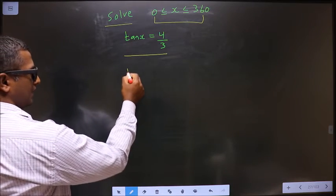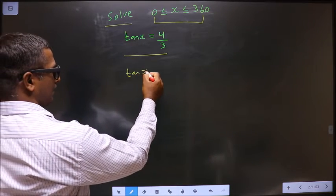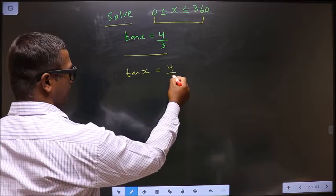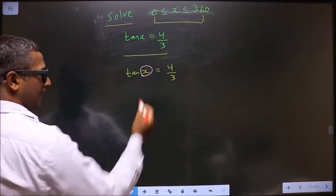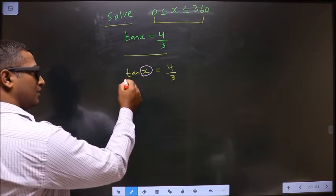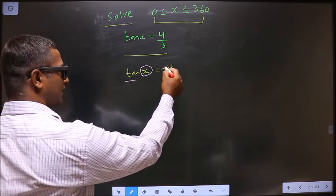The given equation is tan x equals 4/3. Now to find the values for x, you have tan and it is positive.